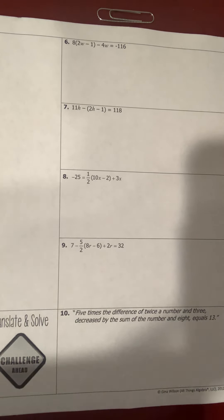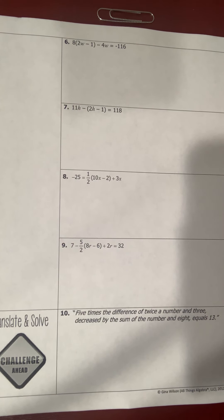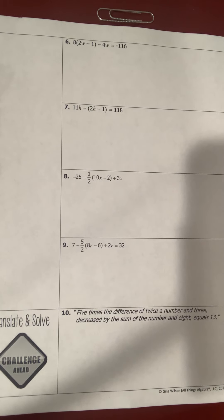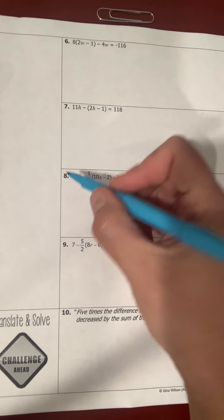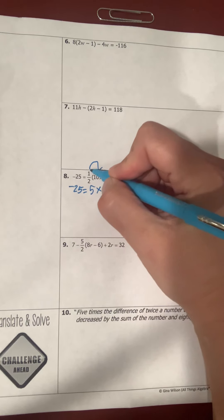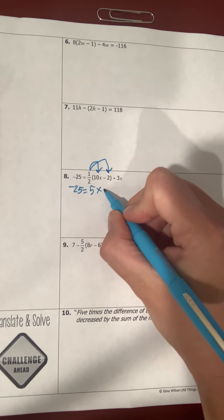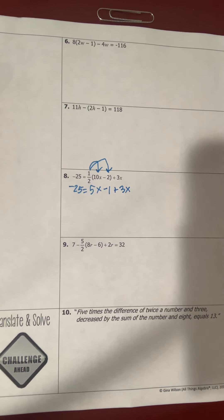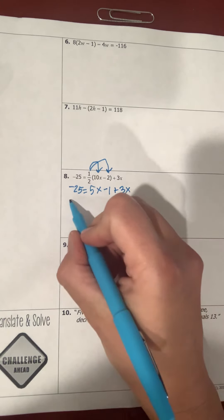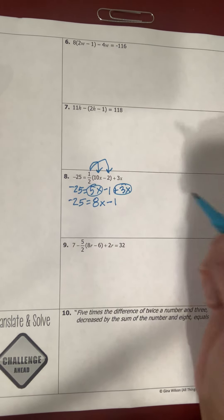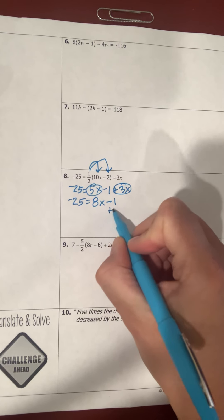Now let's do examples 8 and 9, which have fractions. For example 8, I distribute the one-half: half of 10x is 5x, and half of negative 2 is negative 1, then plus 3x. So I've distributed the one-half. Now I combine like terms: negative 25 stays, and 5x plus 3x is 8x minus 1.